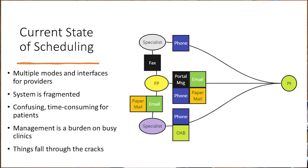This diagram shows the patient and physician experience with regards to scheduling. As you can see, the patient has multiple modes and interfaces to the provider — there's the phone, email, portals, paper mail — and then providers use fax to communicate. The system is fragmented, obviously. It's confusing and time consuming for patients. I'm also a patient, and how many of us know what it's like to be on hold with our doctor's office, only to find out we can't leave a message and wait days to hear back, maybe not at all.